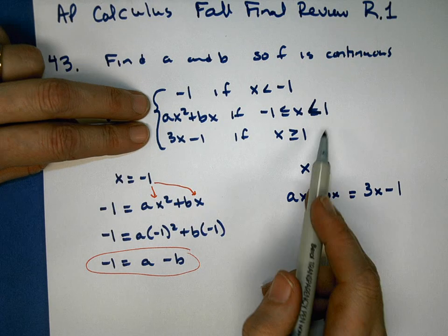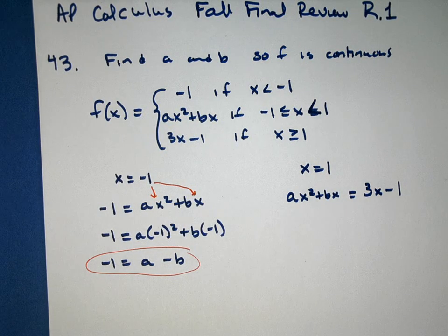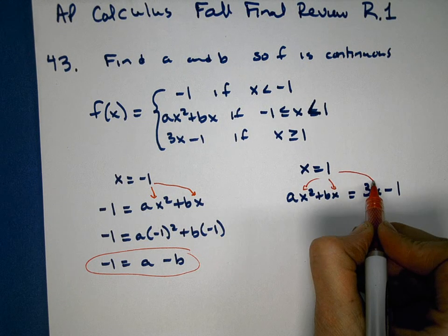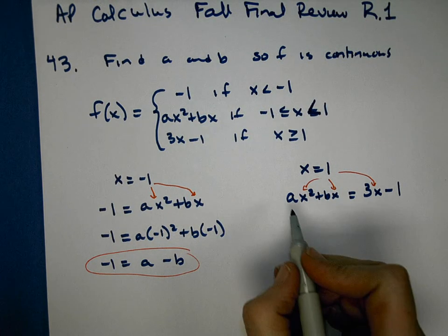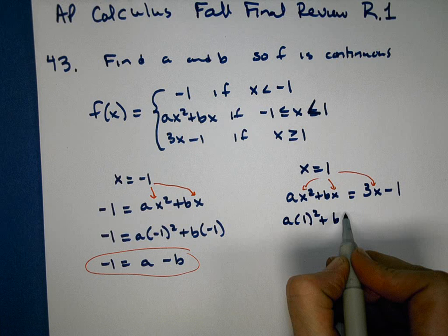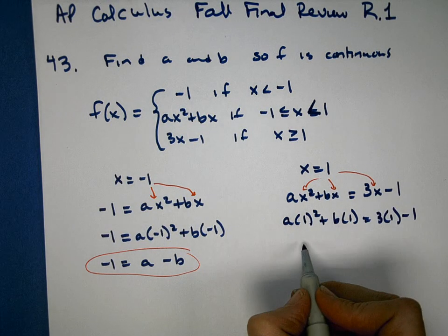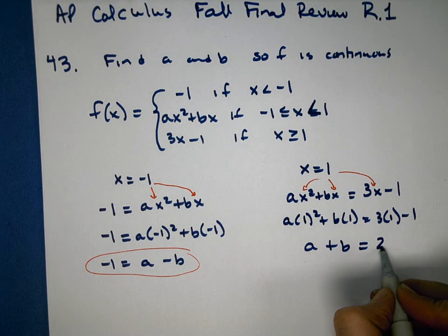We want the Y value that I get from 1 here to be the same as the Y value that I get from 1 there. So we're going to put 1 in every X spot and see if they equal each other. So here I would have A times 1 squared plus B times 1, 3 times 1 minus 1. So this comes out A plus B equals 3 minus 1, or 2.